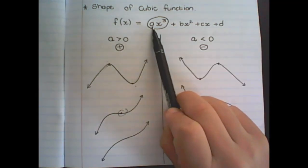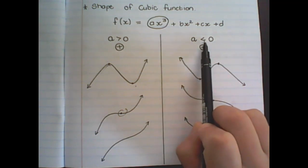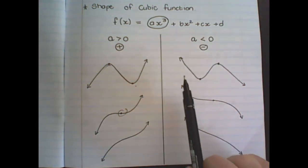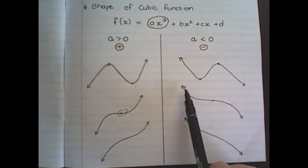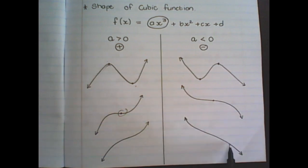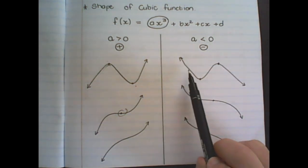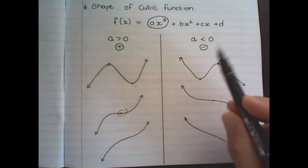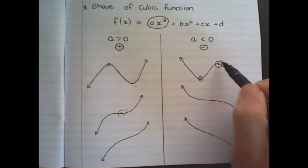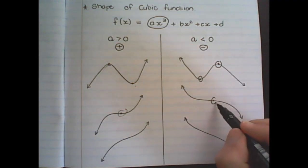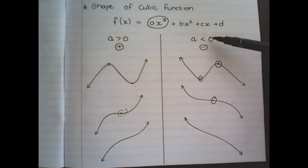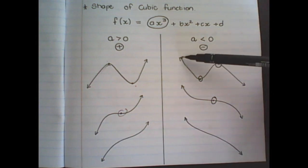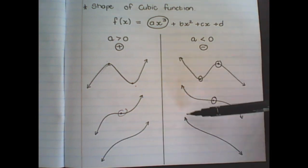When the a value in front of the x cubed is negative or smaller than zero, it's the opposite — the graph starts from the left and goes down first. For all three variations it will go down first. The first type has two stationary points, the second has only one stationary point, and the last variation has no stationary points. It's important to remember that when a is negative, the graph goes down first for all three variations.